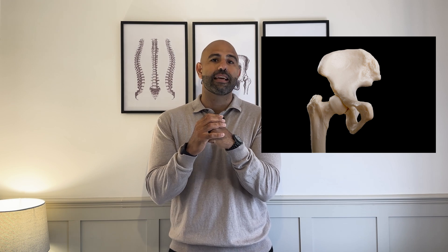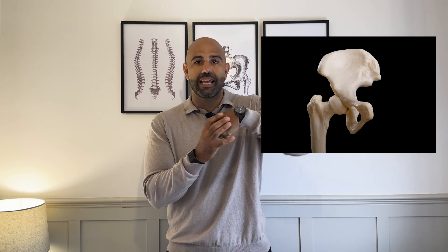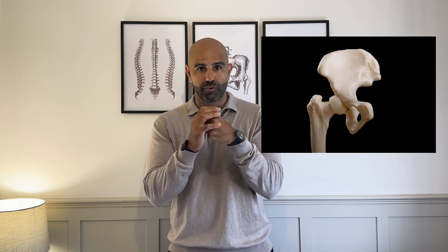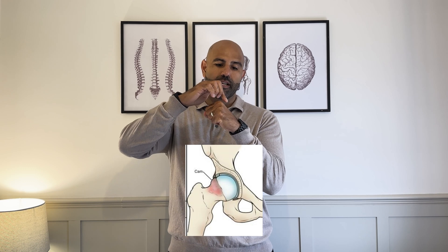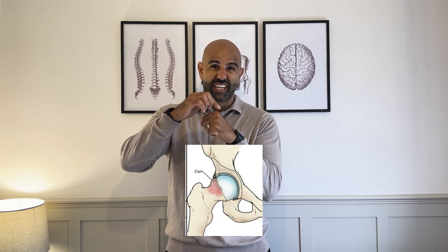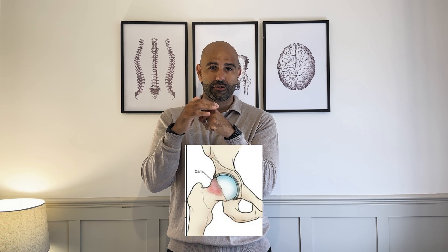Hip impingement is when there's some sort of influence on the mechanics. Normally with a ball and socket you move it around with no problems at all. With FAI syndrome there are two subcategories. One of them is called cam — cam morphology or cam impingement — and that is when you find it on the ball of the socket.